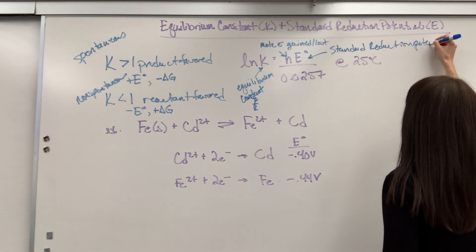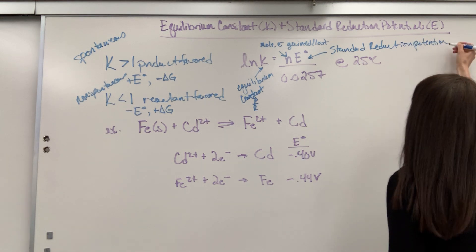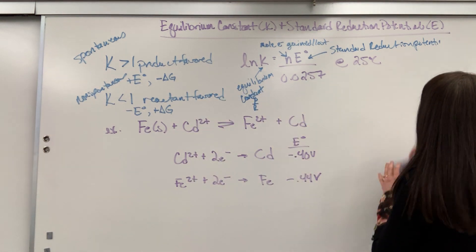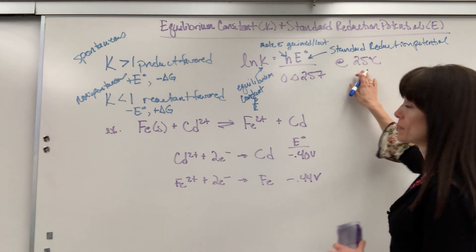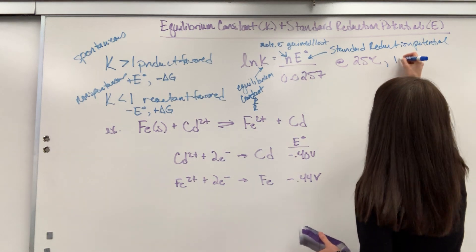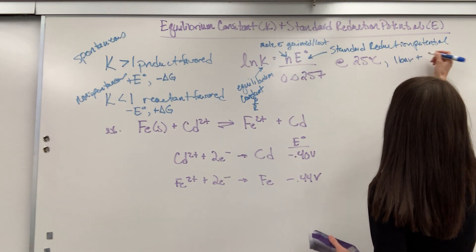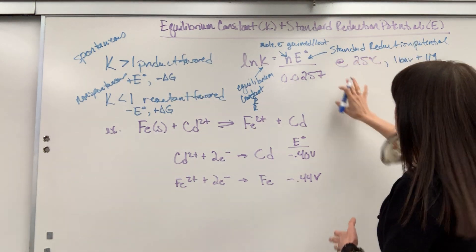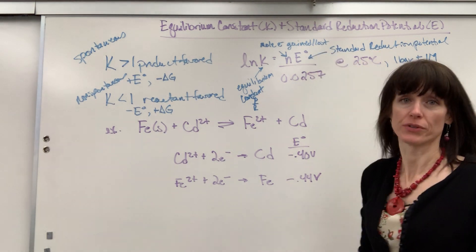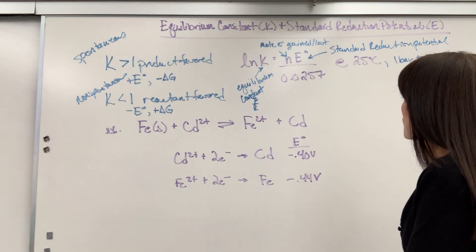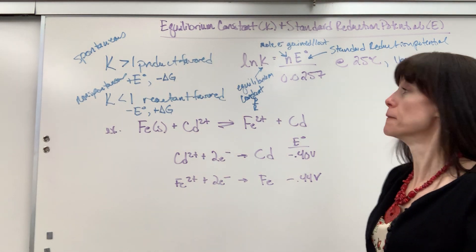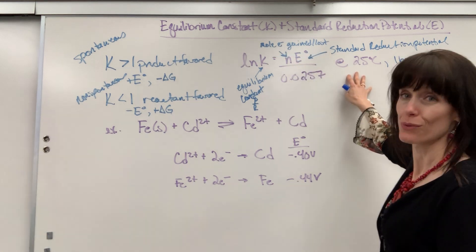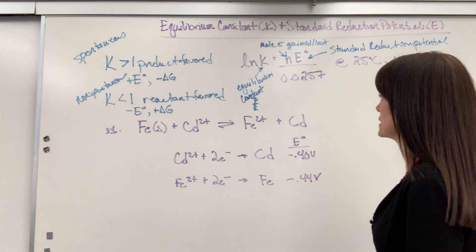This is going to be our standard reduction potential, and you'll recall that naught right there means it's standard conditions. Remember, standard conditions are going to be 25 degrees C, 1 bar, and 1 molar concentrations. So when we are at standard conditions, what is the voltage? What is the potential for that particular cell? This formula right here is when you are indeed at 25 degrees C.